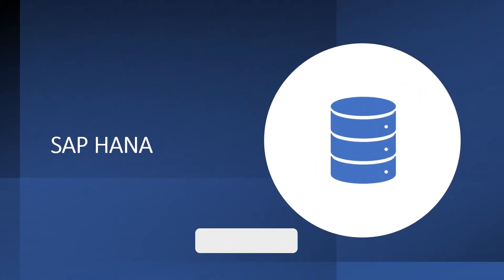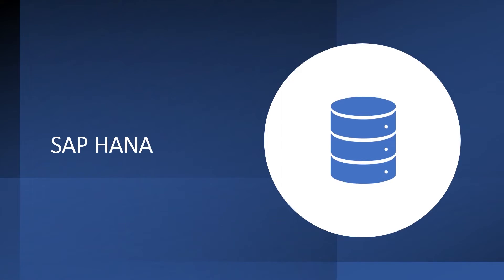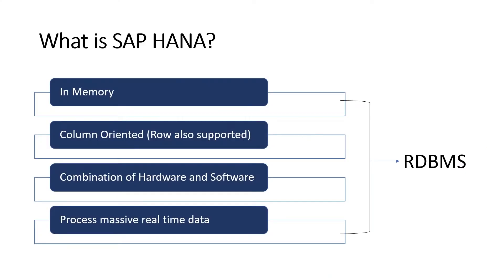Welcome to this course on SAP HANA. SAP HANA is a database introduced by SAP. HANA stands for High Performance Analytical Appliance. It is an in-memory, column-oriented combination of hardware and software that processes massive real-time data. SAP HANA is a relational database management system that is column-oriented and uses in-memory storage.